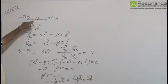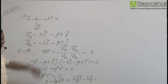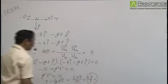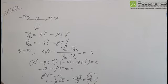So the velocity vectors will become perpendicular after a time root 3 by 5 seconds.